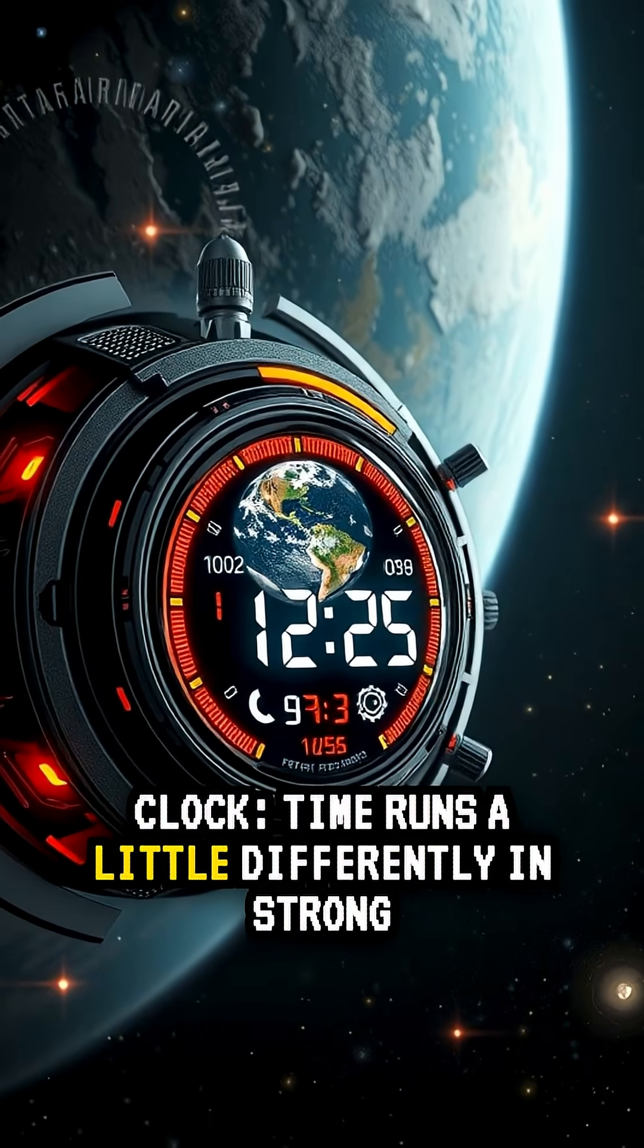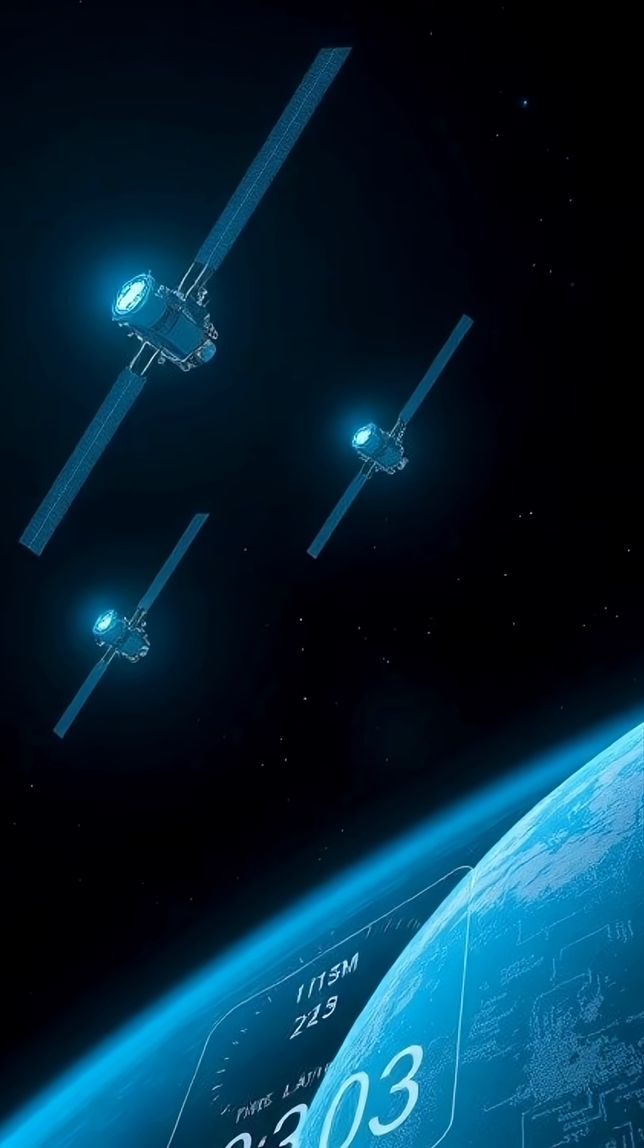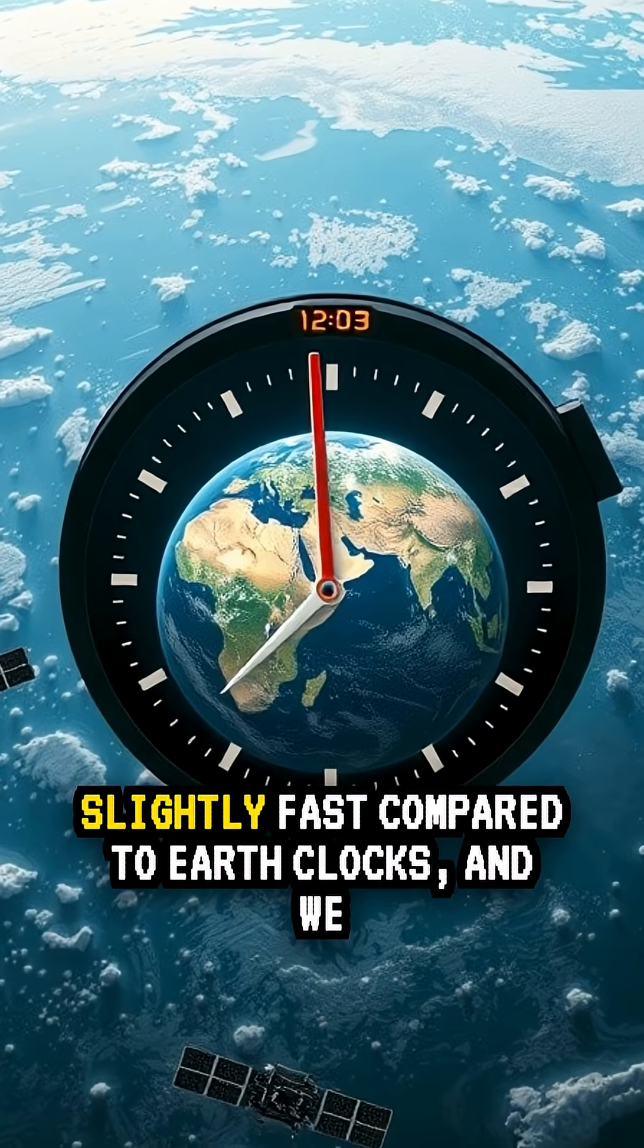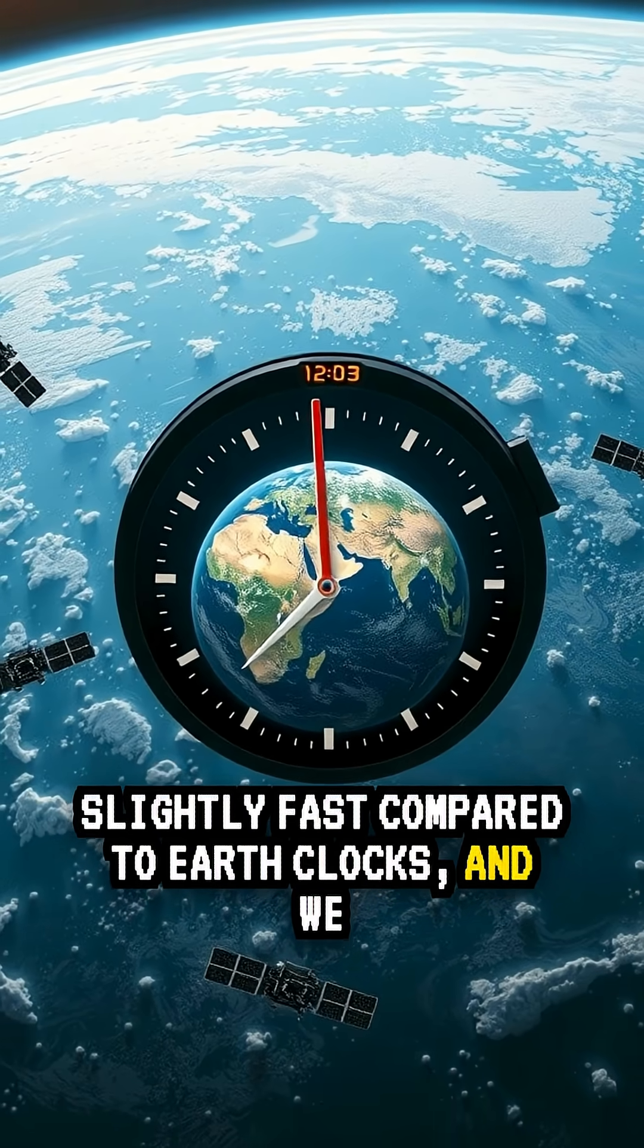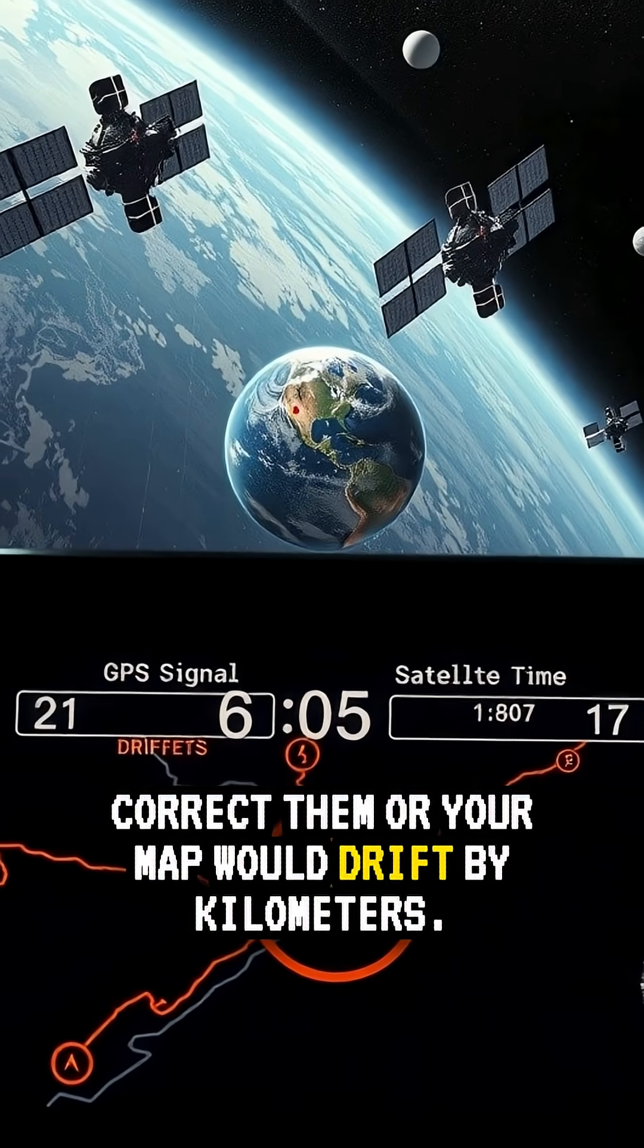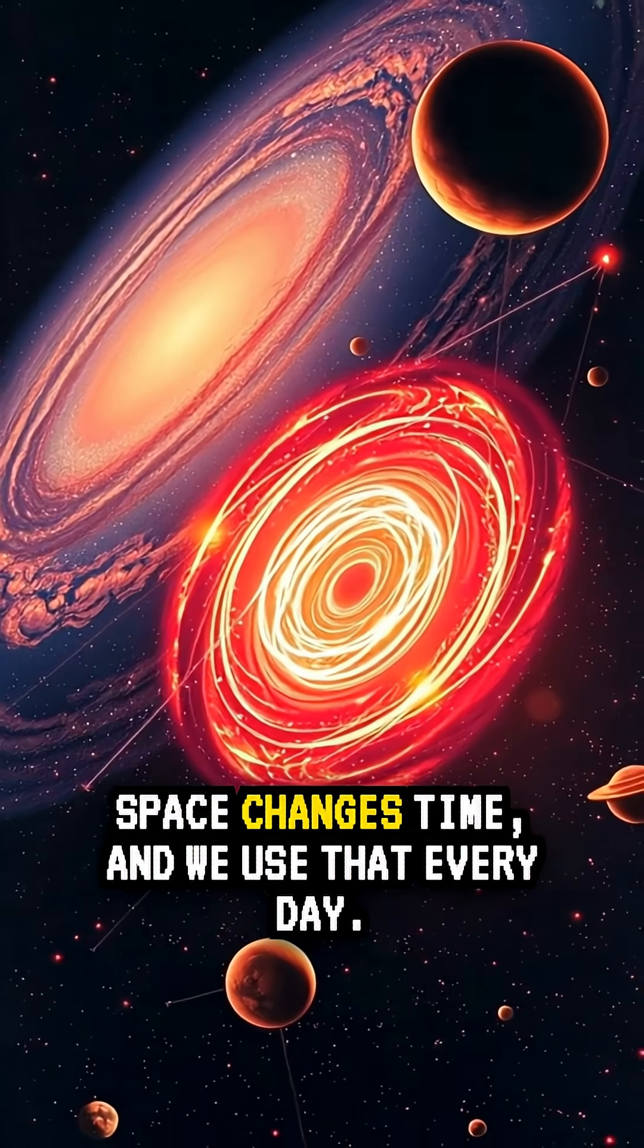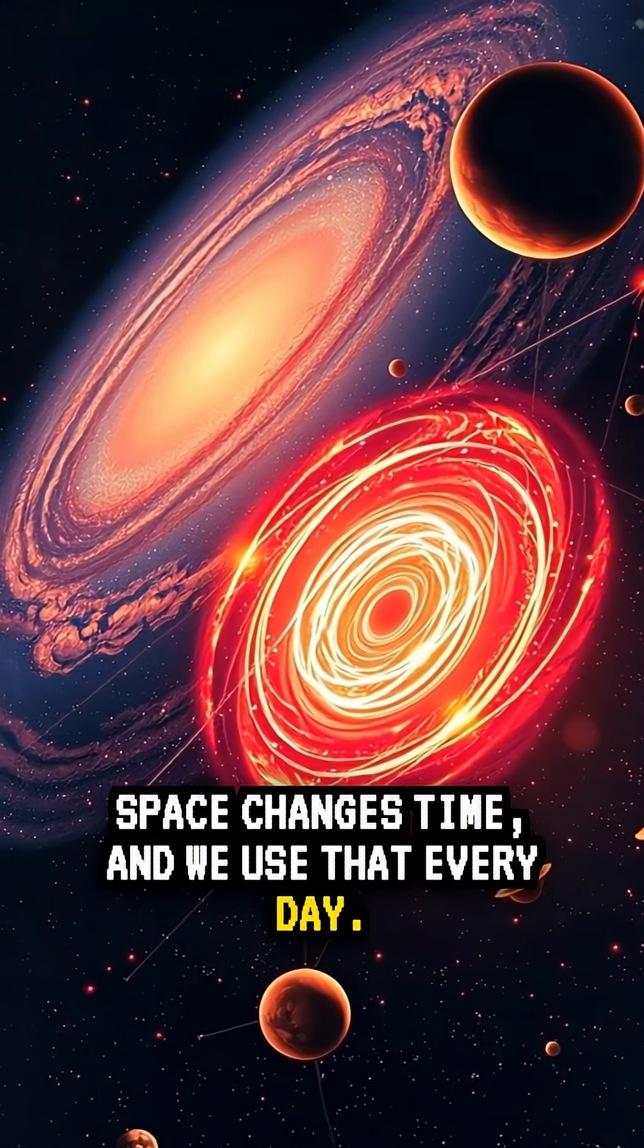Clock. Time runs a little differently in strong gravity and at high speed. GPS satellites run slightly fast compared to Earth clocks, and we correct them or your map would drift by kilometers. Space changes time, and we use that every day.